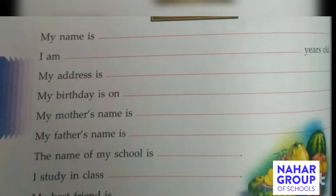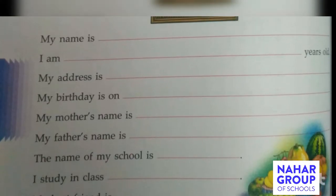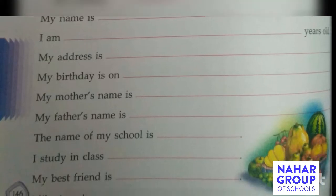Now we will start from here. The first line is 'My name is.' Dear students, here you have to write your full name. Suppose your name is Rani Sharma, so you will write: my name is Rani Sharma. Second, 'I am ___ years old.' Suppose you are seven years old, so you will write: I am seven years old.